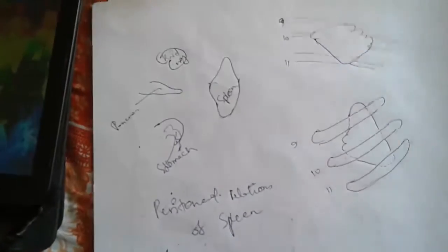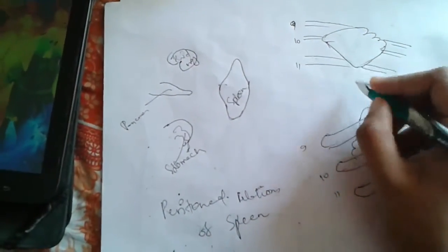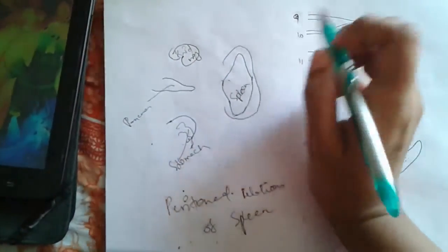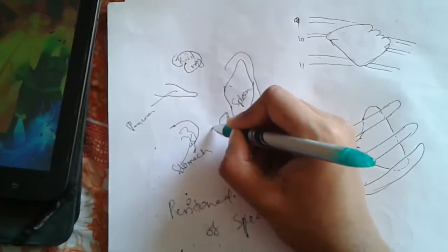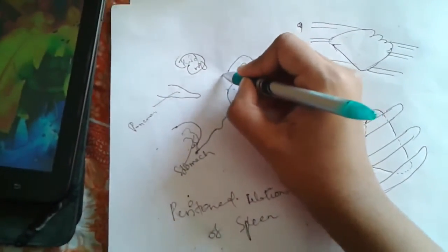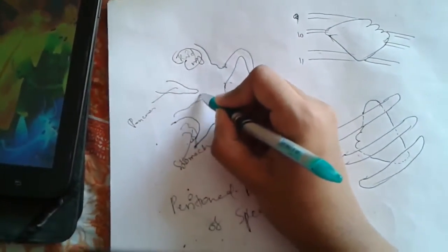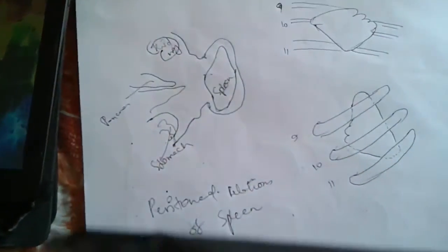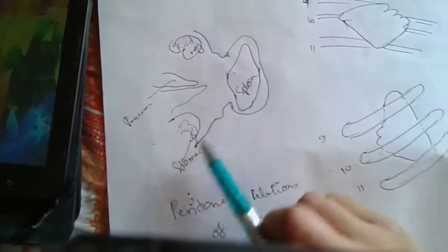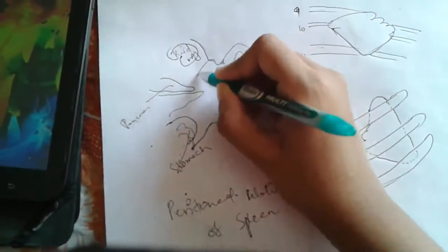Let me draw how the peritoneum covers the spleen. The spleen is completely enclosed by the peritoneum, and at one end it extends into the stomach, continuing along with the peritoneum of the stomach. At the other end it continues with the peritoneum of the kidney. So the peritoneum of the spleen continues with the peritoneum of both the stomach and the kidney.